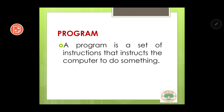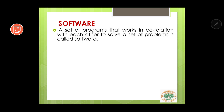Next we will go to the main topic of today's discussion, which is software. If there is only one set of instructions, it is known as a program. But if we have a set of programs — more than one program — and link them so that they perform as an entity, then it is called software. A set of programs that works in correlation with each other to solve a set of problems is known as software.